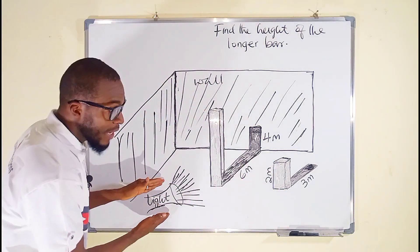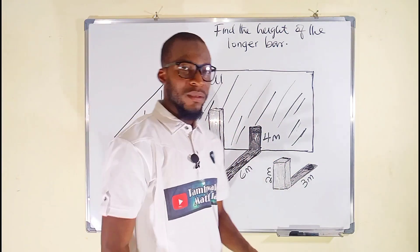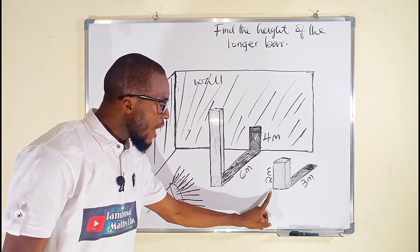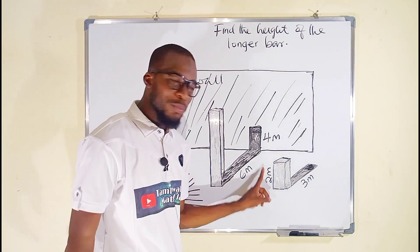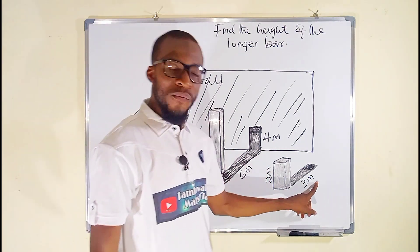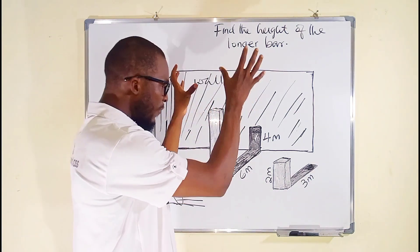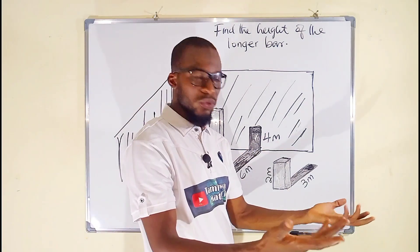What we have here is a light casted on these two bars. After casting light on these two bars, the shorter bar, which has a height of two meters, produces a shadow of three meters. You know definitely if you cast light on vertical bars, they have to produce shadows.